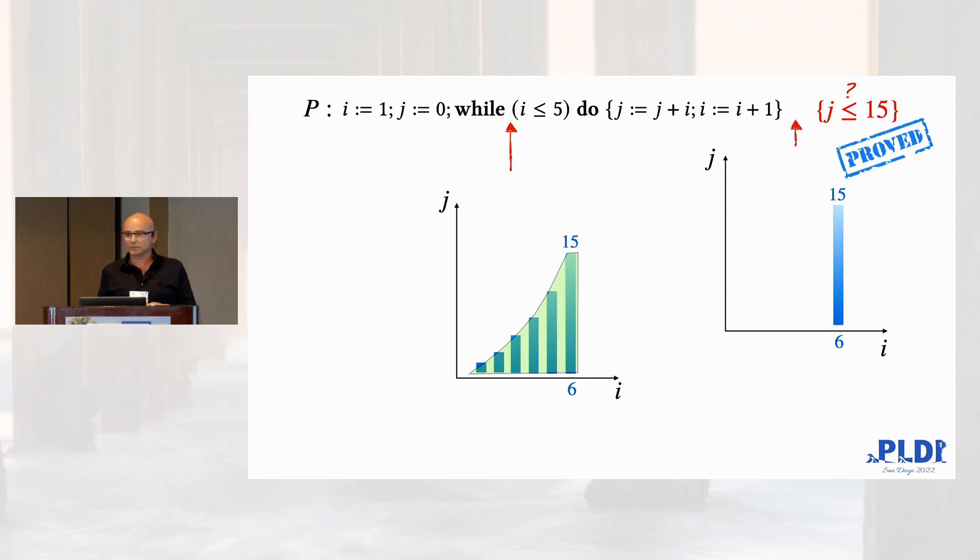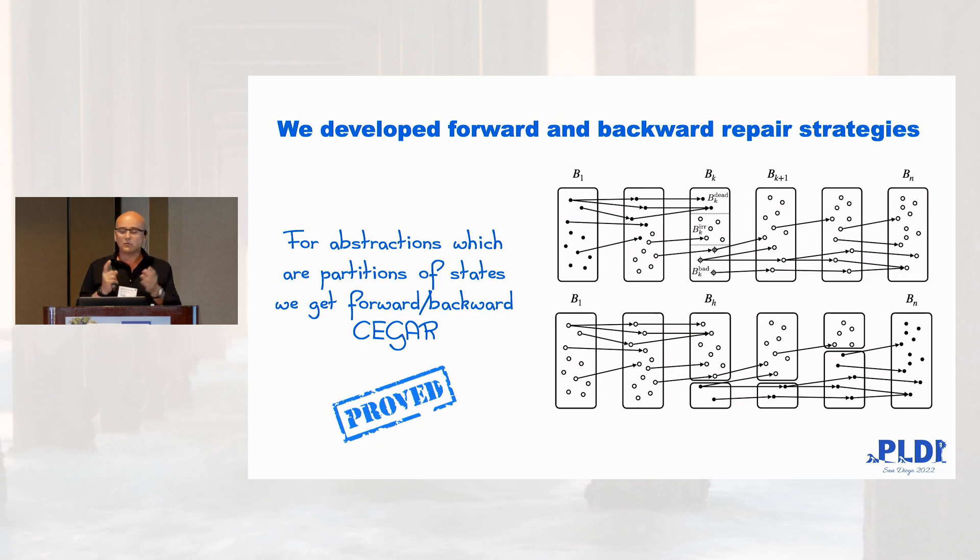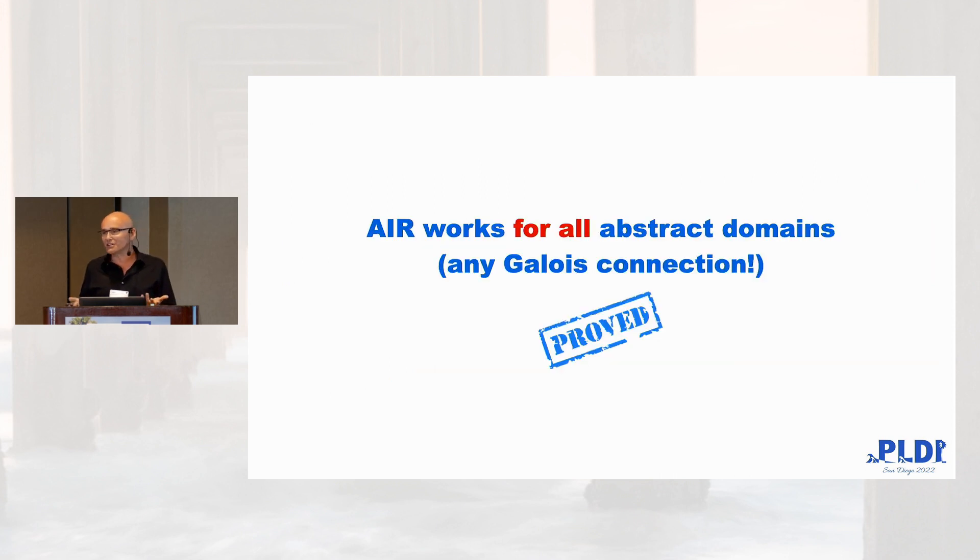So what did we do eventually at the end of this talk? This is just to give you to clarify the idea. We developed forward and backward strategies for abstraction repair. The interesting thing is that no matter if you are forward or backward you can completely reconstruct Seeger by considering a very specific abstraction which is a partitioning. If you partition your state space then you get Seeger.